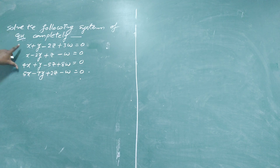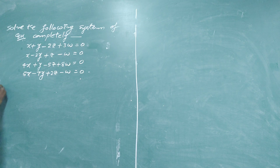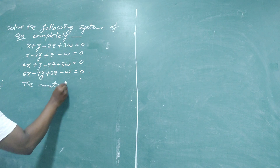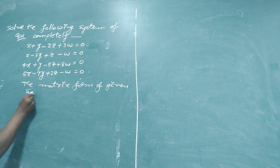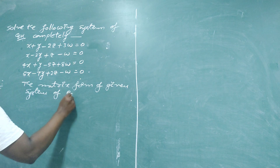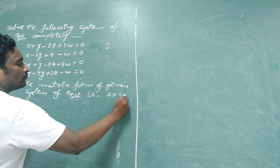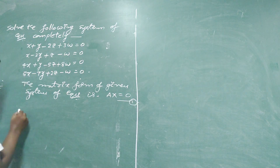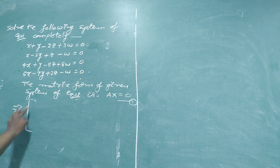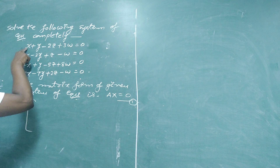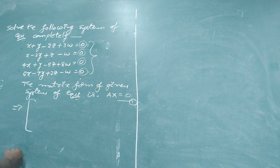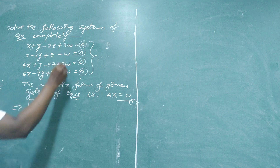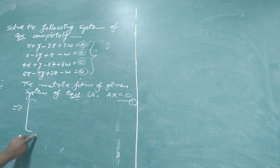This is another example on solving the system of homogeneous equations. First of all, we have to write the matrix form. The matrix form of the given system of equations is AX = O — take it as equation number 1. A is the coefficient matrix. The given system is homogeneous because all constants on the right side are 0. We observe that 4 equations with 4 variables are given, so the coefficient matrix is a 4×4 matrix.